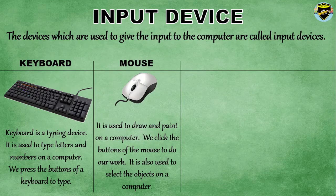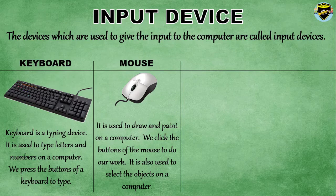Mouse. It is used to draw and paint on a computer. We click the button of the mouse to do our work. It is also used to select objects on a computer.